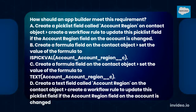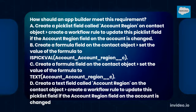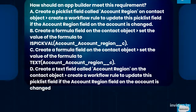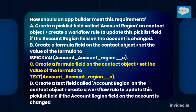C. Create a formula field on the contact object, then set the value of the formula to TEXT(account__account_region__c). D. Create a text field called 'account region' on the contact object, then create a workflow rule to update this picklist field if the account region field on the account is changed. The answer is option C: create a formula field on the contact object and set the value of the formula to TEXT(account__account_region__c).